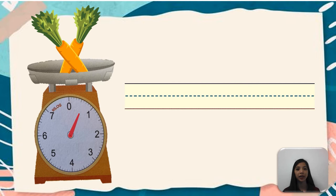Let's have an example in measuring weight. So the pointer points to the 1st, 2nd, 3rd, 4th, 5th, 6th division between 0 and 1 kilogram marks. So each division counts 100 grams, 200 grams, 300 grams, 400 grams, 500 grams, 600 grams. So therefore, the two carrots weigh 600 grams.